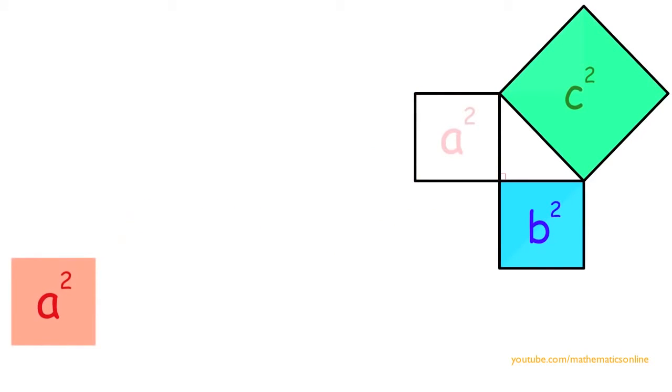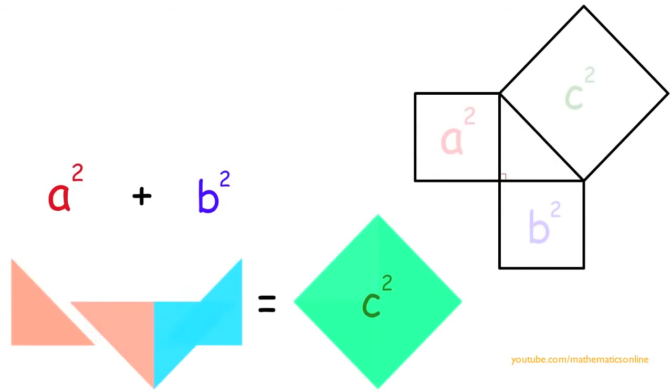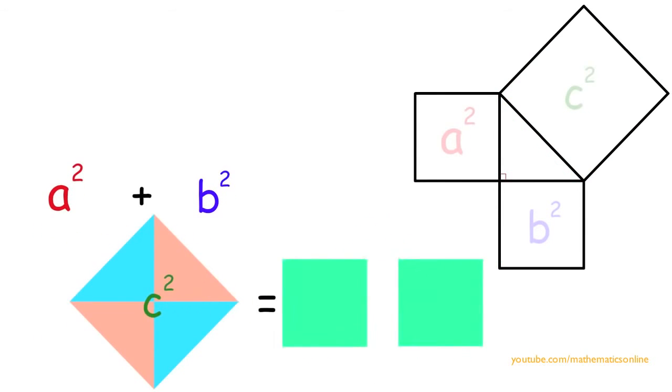So from this we get A squared plus B squared is equal to C squared. And by rearranging the shapes, we can see that this is true.